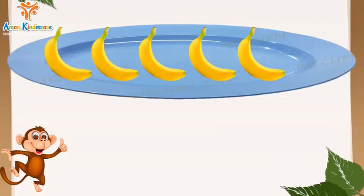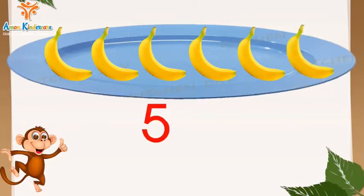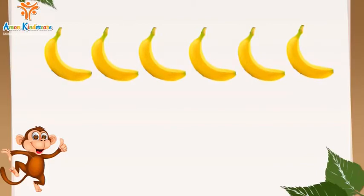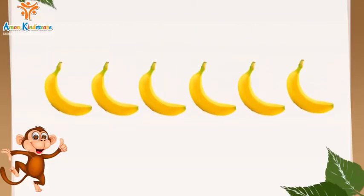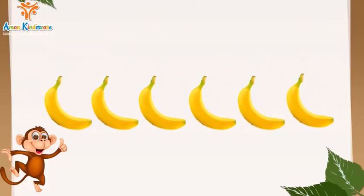Ở đây, cô có một đĩa chuối. Trong đó có 5 quả chuối. Sau đó, cô thêm vào một quả chuối nữa. Hỏi rằng lúc đó cô có tất cả bao nhiêu quả chuối? Vậy là 5 quả chuối thêm một quả chuối bằng 6 quả chuối. Hay 5 thêm một bằng 6.